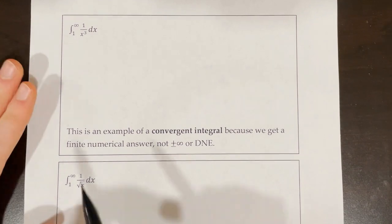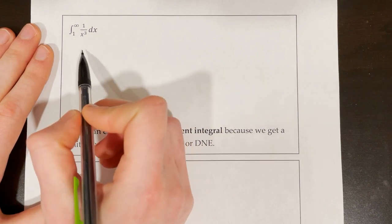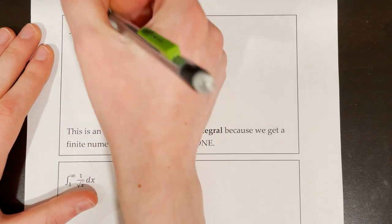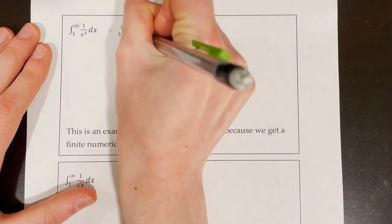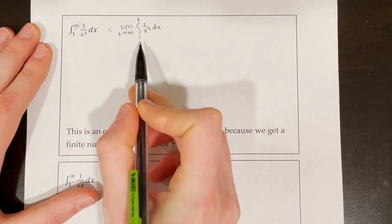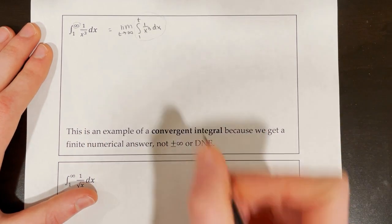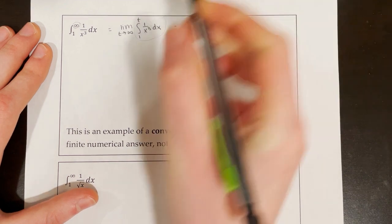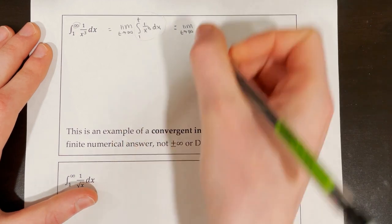Let's work through our first example: the integral from 1 to infinity of 1 over x cubed dx. The first step is to identify the problem and replace that with a variable and add a limit to the front. The problem here is the infinity. So we say this is equal to the limit as t approaches infinity of the integral from 1 to t of 1 over x cubed dx. Rewriting it this way will allow us to take this integral. We'll rewrite 1 over x cubed as x to the power of negative 3 so that we can actually integrate using the power rule.